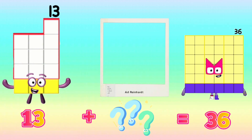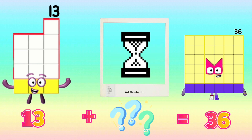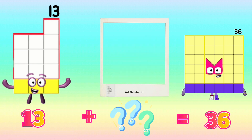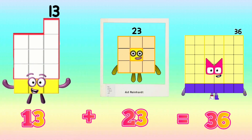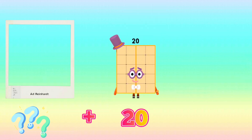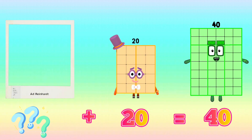13 plus what is equals to 36? What is the missing addend? And the correct answer is 23. 13 plus 23 is equals to 36.